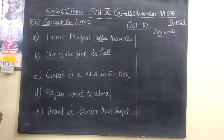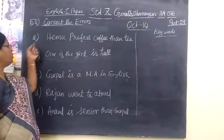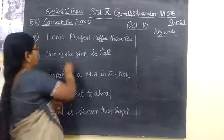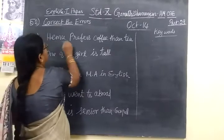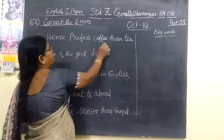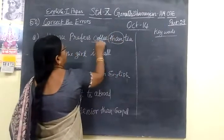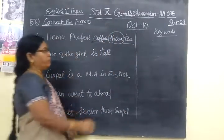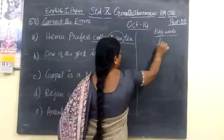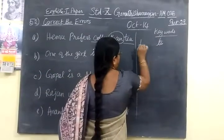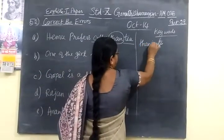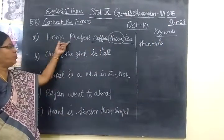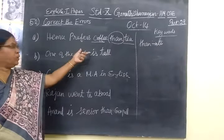Now for October 2014, first one: 'Amo prefers coffee than tea.' When two things are being compared using 'prefer,' instead of 'than' you have to use 'to.' That is the keyword. The correction is: 'Amo prefers coffee to tea.'